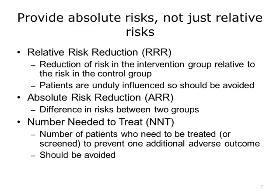Another strategy is to provide absolute risks, not just relative risks. Risk reduction can be presented using relative risk reduction, or RRR, absolute risk reduction, or ARR, or numbers needed to treat, or NNT. The relative risk reduction is the reduction of risk in the intervention group relative to the risk in the control group. The absolute risk reduction is the difference in risks between two groups. The number needed to treat is the number of patients who need to be treated or screened to prevent one additional adverse outcome. Patients are unduly influenced when risk information is presented using a relative risk approach. This can result in suboptimal decisions and should be avoided. The NNT was found to be the most difficult for patients to understand, and it is recommended that this should never be the sole way information is presented.